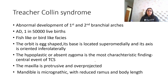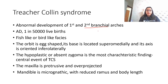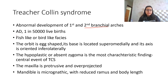Now coming to Treacher Collins syndrome. The most common etiology is abnormal development of the first and second branchial arches — very important embryology to know. This is a typically autosomal dominant condition, occurring in approximately one in 50,000 live births.